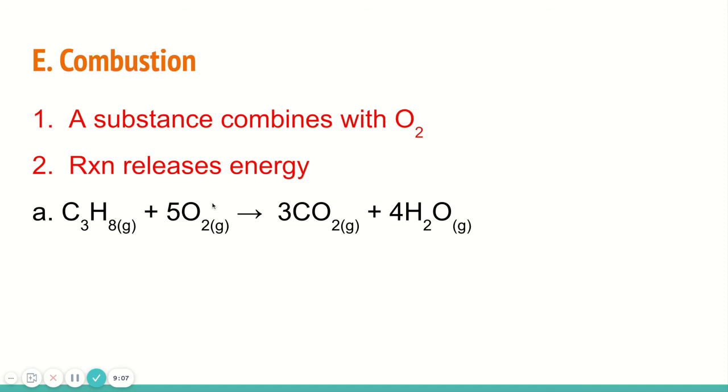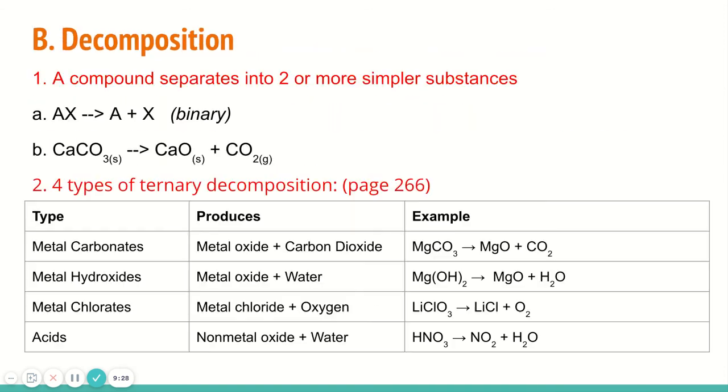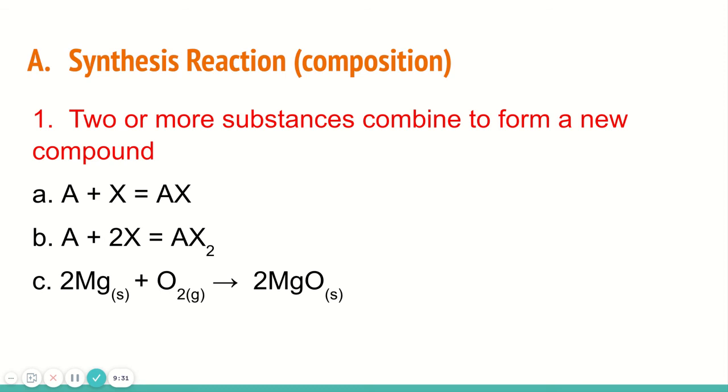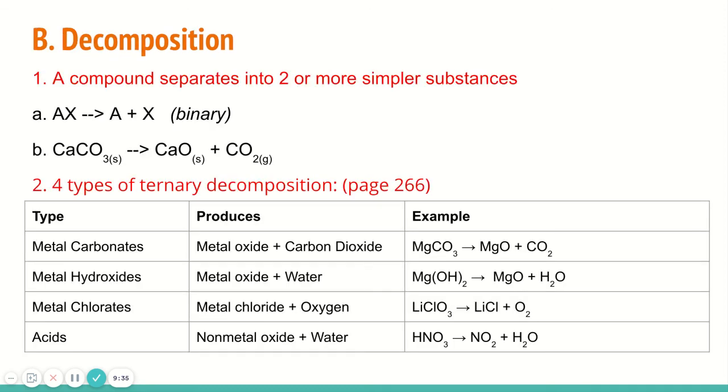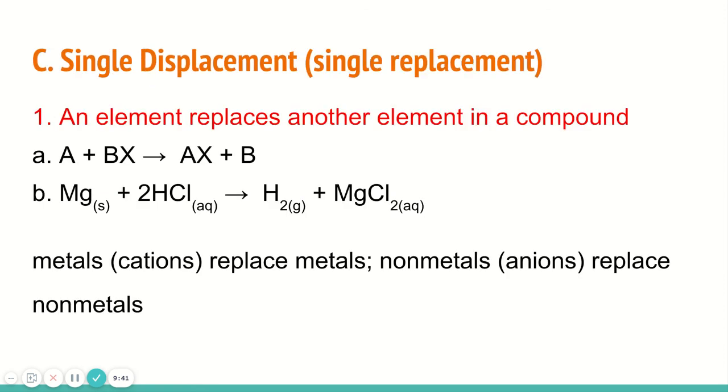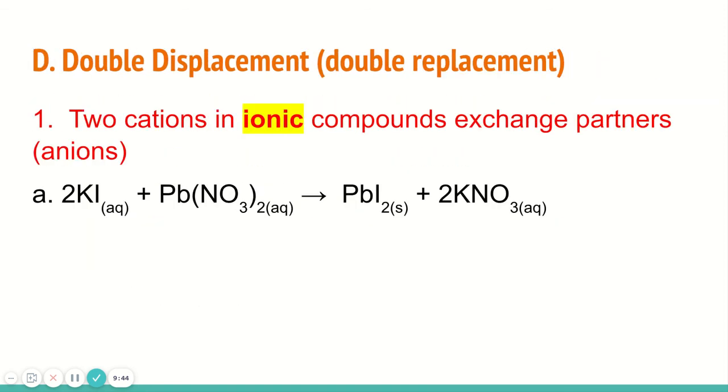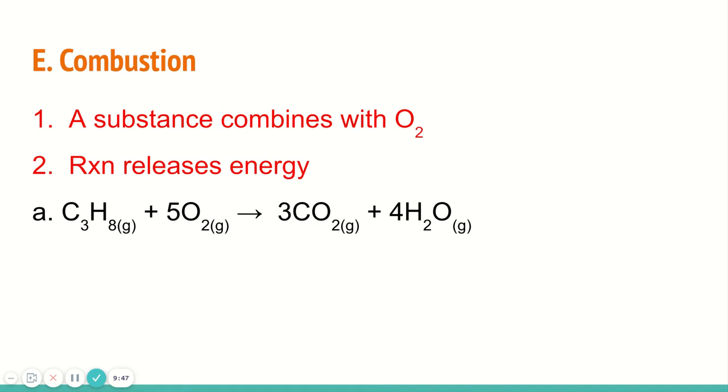Combustion kind of looks like a single replacement reaction if you only looked at the reactants because it's a compound and an element, but you need to identify that the element you're adding is oxygen. That will be your clue that it is combustion and you need to make carbon dioxide and water as your products. Just based on the reactants, you should be able to identify each type of reaction. Synthesis is two elements. Decomposition is only one compound, just one reactant. Single displacement is one element and one compound. Double replacement is two compounds. And combustion is a hydrocarbon plus oxygen. So those are your five main types.